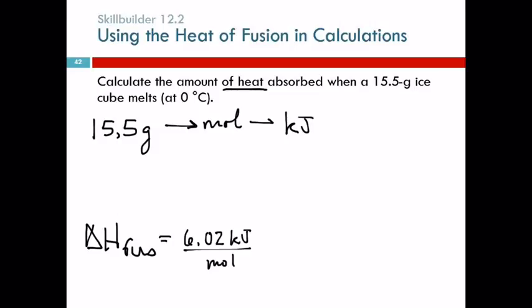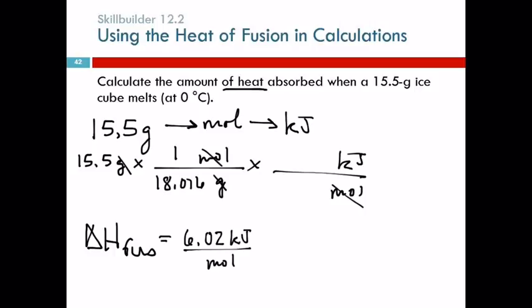We need moles in the middle. Moles often end up being in the middle. 15.5 grams of water will convert to moles, and then we'll convert to kilojoules. One mole of water weighs 18.016 grams. Now you can probably tell how I've got that memorized. I keep using it over and over again. And there's 6.02 kilojoules per mole. That reminds me of Avogadro's number. So, I'm getting an answer. This should have three sig figs. 5.18 kilojoules.